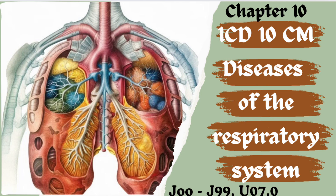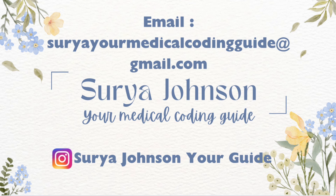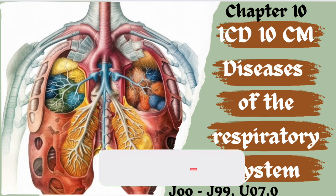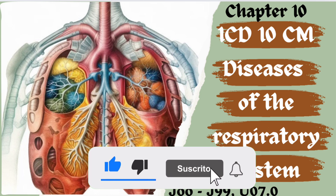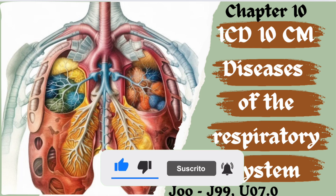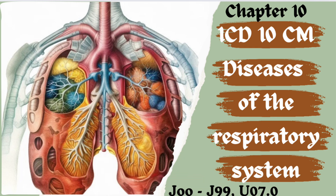Those are the important guidelines to take note of when coding the respiratory system in ICD-10-CM — chapter 10, diseases of the respiratory system, J00 to J99 and U07.0. Hope this video is clear. If you have doubts, please ask in the comment section below, or email or Instagram me. If you're interested in the anatomy PDF, email me at the address provided. If you haven't subscribed yet, please subscribe and hit the notification bell icon. If you found this video useful, please like and share with other medical coding friends. See you in the next guideline — this is Surya Johnson, your medical coding guide.